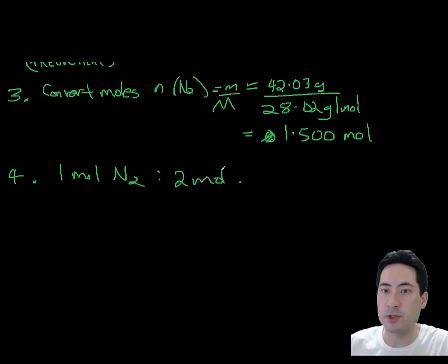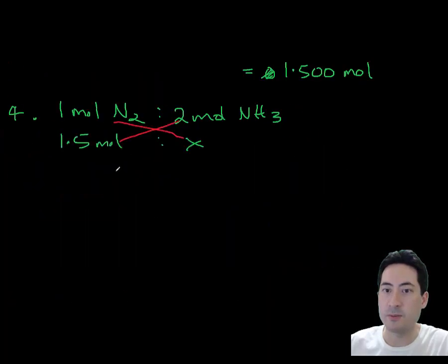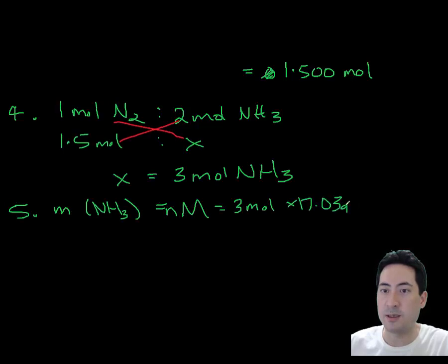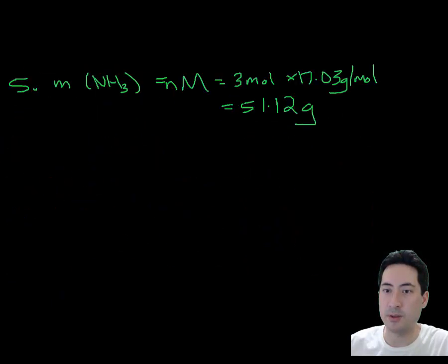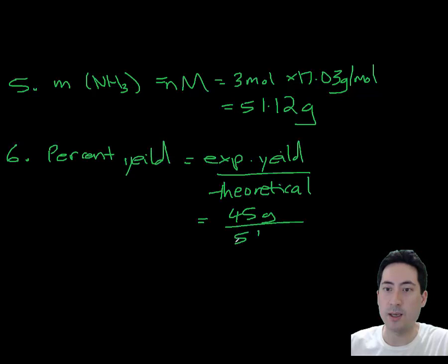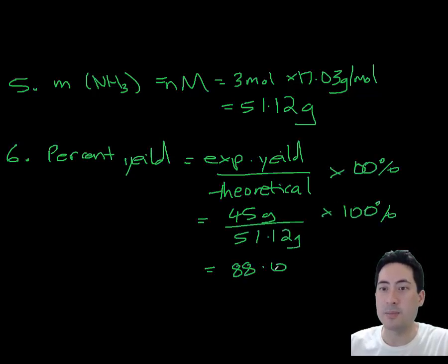So what we should have got is 3 moles of ammonia, and the mass of that is 51 grams. We got 45, so you divide 45 by 51, and then you get your final answer as 88%.